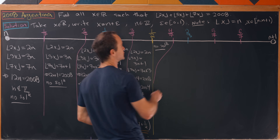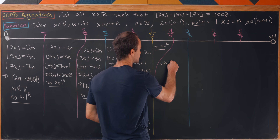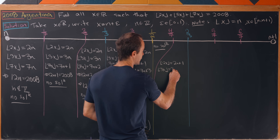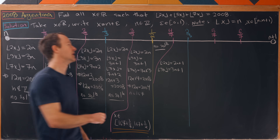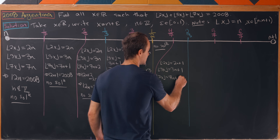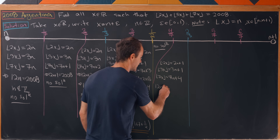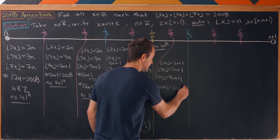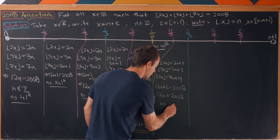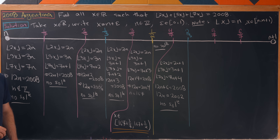Between 4/7 and 2/3: floor(2x) = 2n + 1, floor(3x) = 3n + 1 (still less than 2/3), and floor(7x) = 7n + 4 (above 4/7). Adding those together: 12n + 6 = 2008, so 12n = 2002. Again no solution, because the left-hand side is divisible by 3 whereas the right-hand side is not.